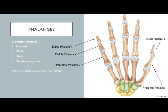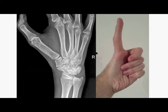The thumb has no middle phalanx — just a proximal and distal phalanx — because our earliest known fish ancestor (extinct ~230 million years ago) had a pectoral fin with hand-like bones that only had two thumb phalanges. So we likely don't have a middle thumb phalanx because our ancestors didn't. It can happen as a variation — that would be metacarpal one, then proximal, middle, and distal phalanx.